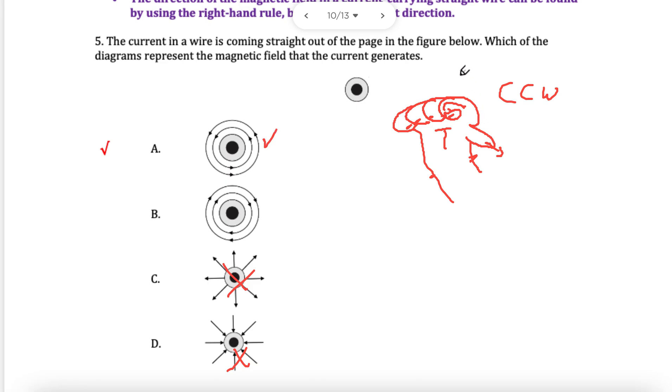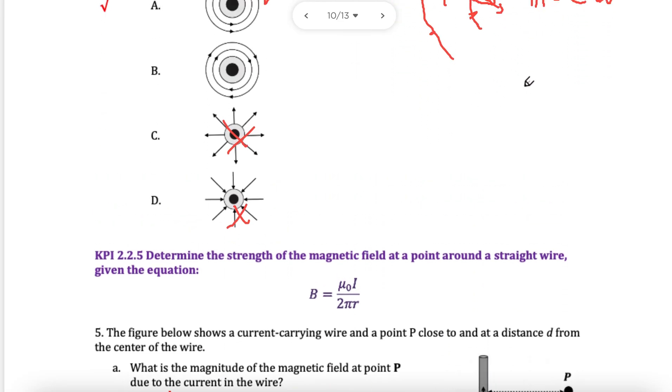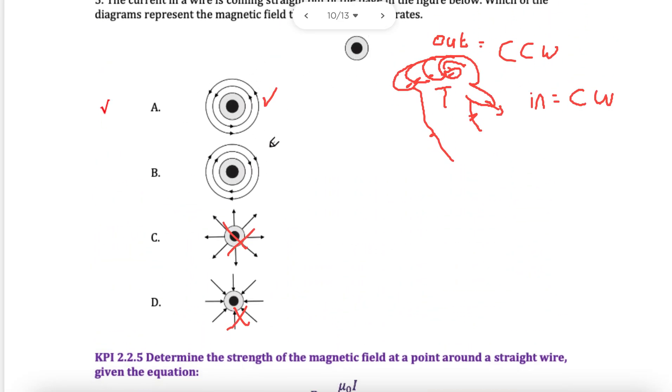You can make it easier for yourself. You can say out is always, if the current is coming out, it's always counterclockwise. That means in must always be the opposite, just clockwise. You can check yourself. Take your thumb, point it towards the screen, and look at your fingers curling. They are curling clockwise. That's a hint for the right-hand grip rule for current coming in and out of the page.